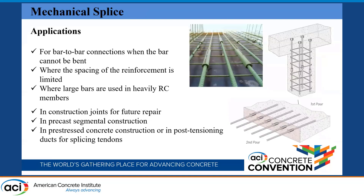Mechanical splices are the best alternative when lap splicing is not practical. They can be used for bar-to-bar connection when the bar cannot be bent, as in the case of FRP bars, or where the spacing of reinforcement is limited, or where large bars are needed in heavily reinforced concrete members, or in construction joints for future repair, precast segmental construction, pre-stressed concrete construction, or post-tensioning ducts for splicing tendons when tendon lengths are short due to misfabrication or misalignment.